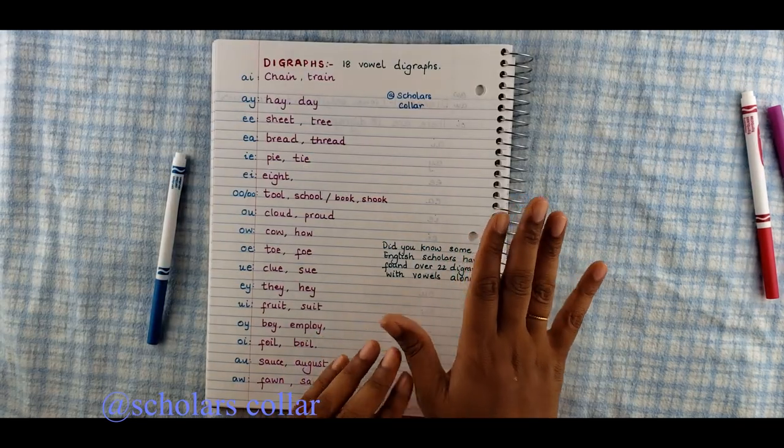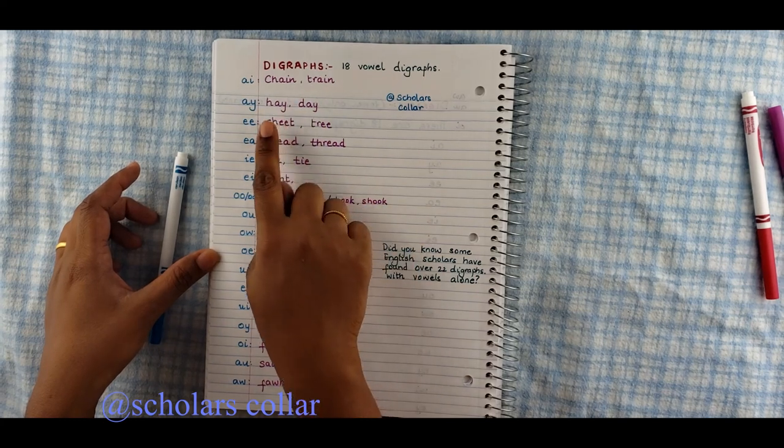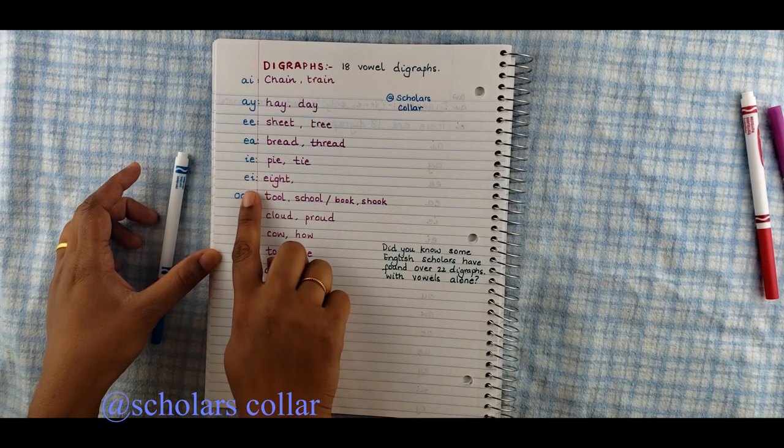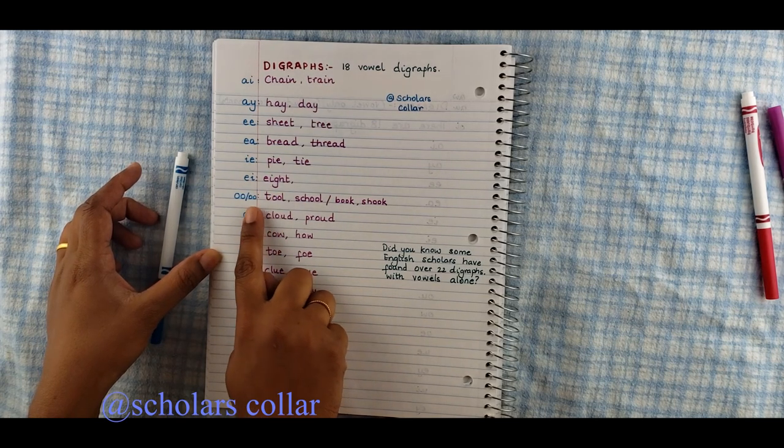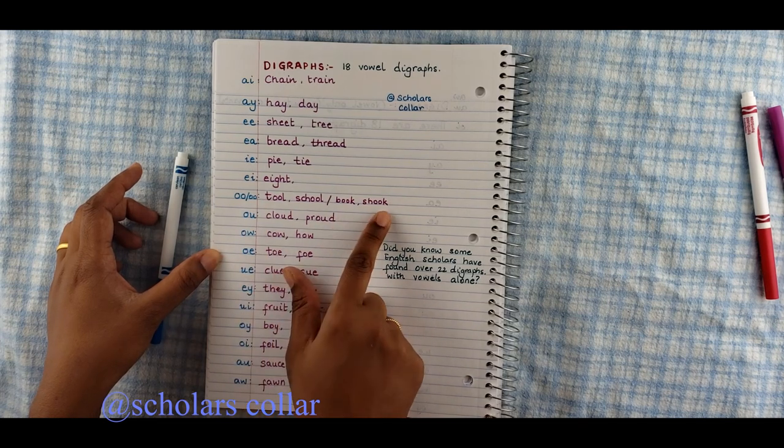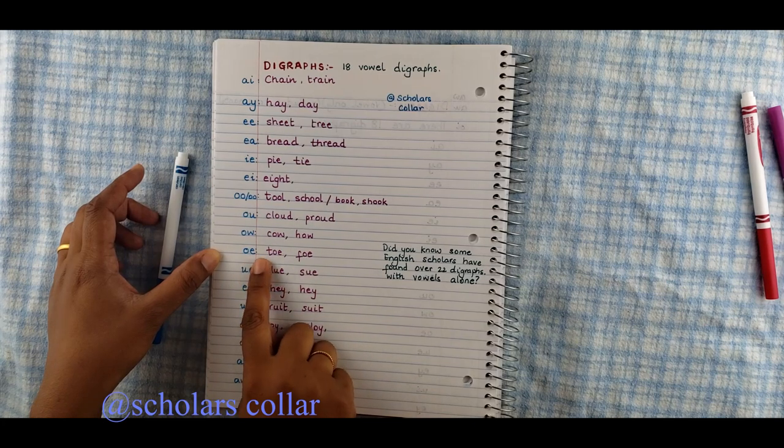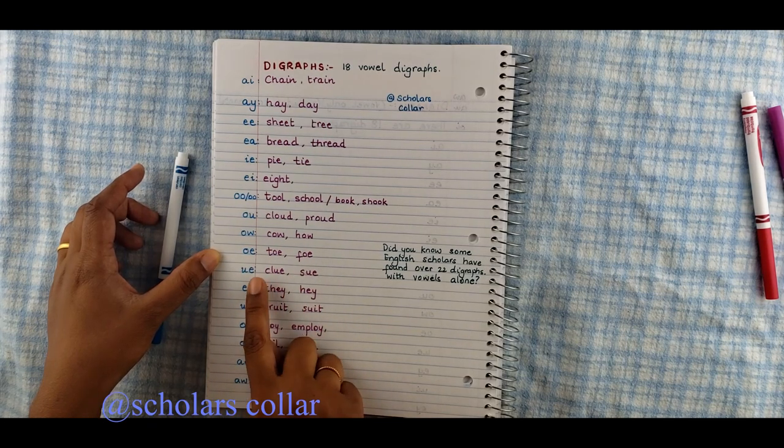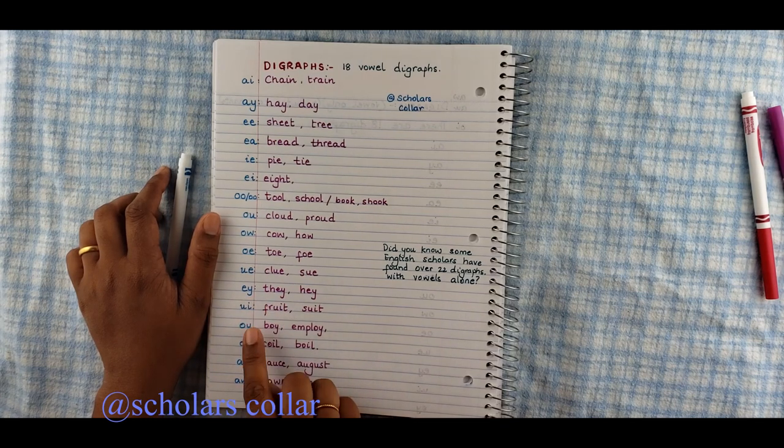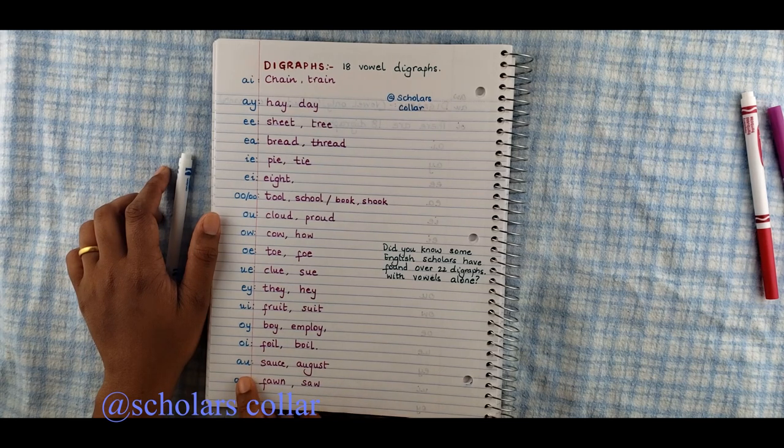Syllable. Coin. Coin. One word. Marker. Marker. Two syllables. Heater. Two syllables. So the diphthong has to make its sound in only one syllable. There are digraphs that has 18 vowel digraphs. Digraphs are A as in chain, A as in hay, E as in she, E as in bread and thread, I as in pie, A as in eight, O as in tool and school, O as in book and shook, O as in cloud and proud, O as in cow and howl, O as in toe and foal, U as in clue and sue, A as in they, U as in fruit, O as in boy, O as in foil, O as in sauce, O as in fawn.